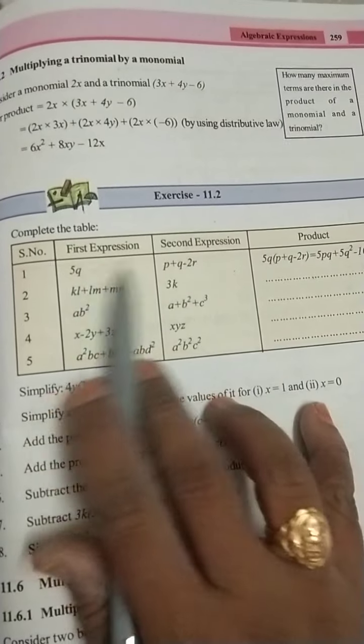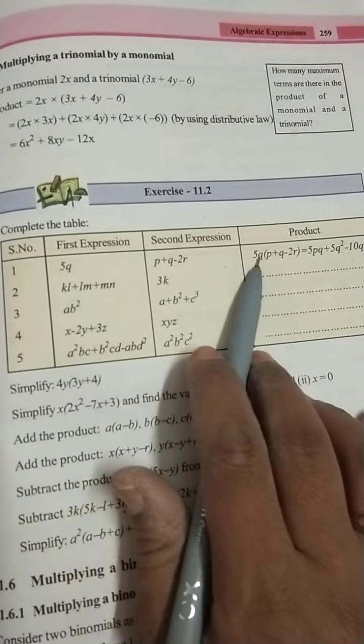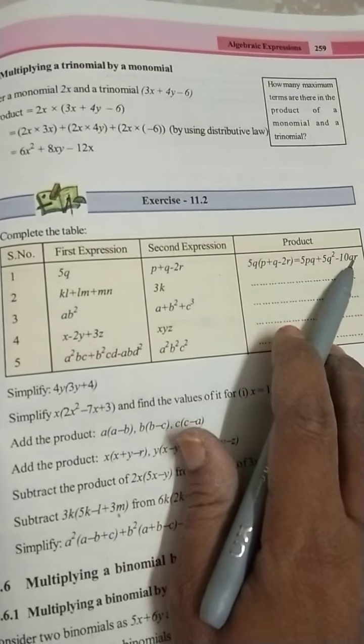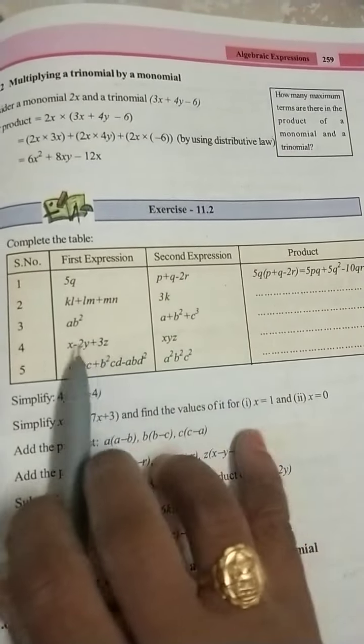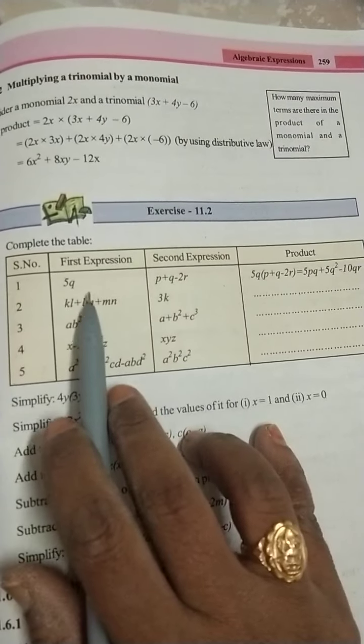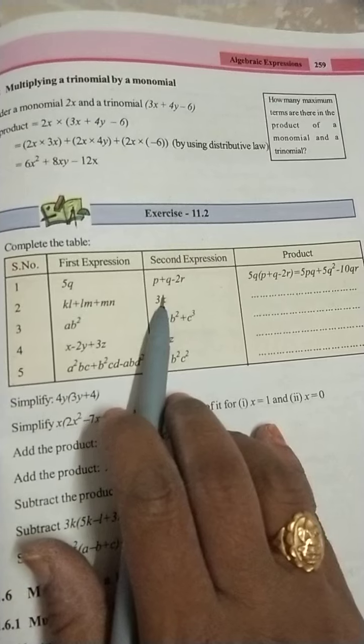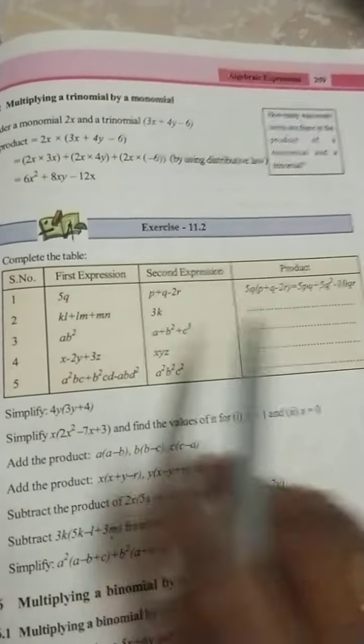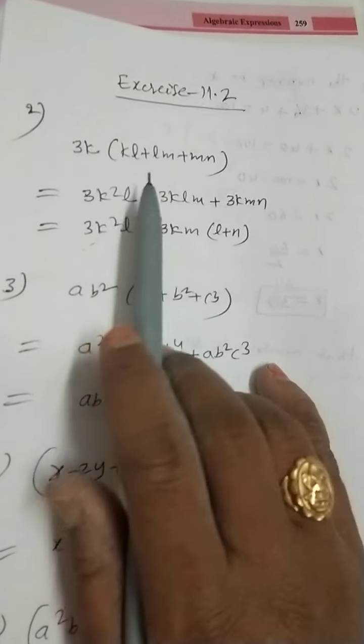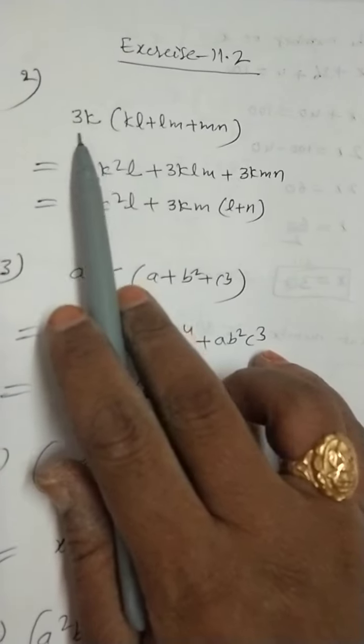You can find this product of two expressions. So here already, first bit is given, product. Similar way, we can find out 2, 3, 4, 5. Just first expression into second expression. So here, I did, see, first expression into second expression. So very simple, just you can multiply.